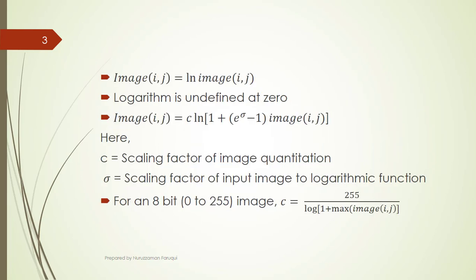Our input image is image(i,j). Here, i and j represent the pixel value. To convert this image into logarithmic scale, we have used log image(i,j). However, logarithm is undefined at 0. To avoid unwanted mistakes, we have used image(i,j) = c ln[1 + (e^σ - 1) image(i,j)].